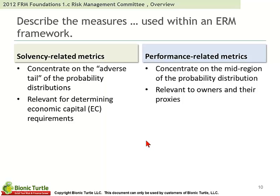In terms of this paper, we have the distinction between solvency-related metrics, which concentrate on the adverse tail of the probability distribution and are relevant for determining economic capital requirements, in contrast to performance-related metrics that concentrate on the mid-region — or body — of the probability distribution.